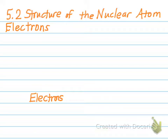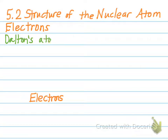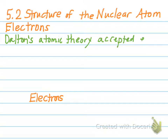My assumption is that most of you have probably learned this at some point in the past but it might have some cobwebs on it, and so the purpose of this is just to make sure everyone's on the same page moving forward. We're going to start by talking about Dalton's atomic theory and the fact that Dalton's atomic theory is accepted today, except that atoms are divisible.